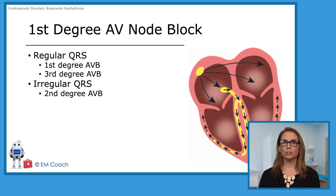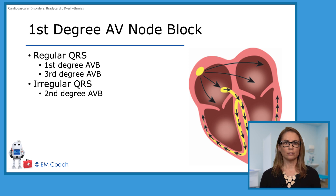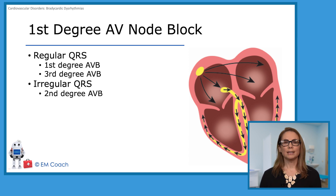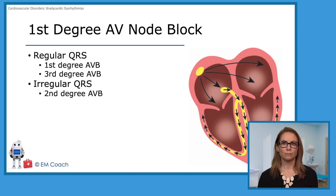We'll talk here about first, second, and third degree AV blocks. If there is a regular QRS and there's an AV nodal block, then it's either a first degree or a third degree block. If the rate is irregular, then it has to be a second degree block. Let's walk through each of those.